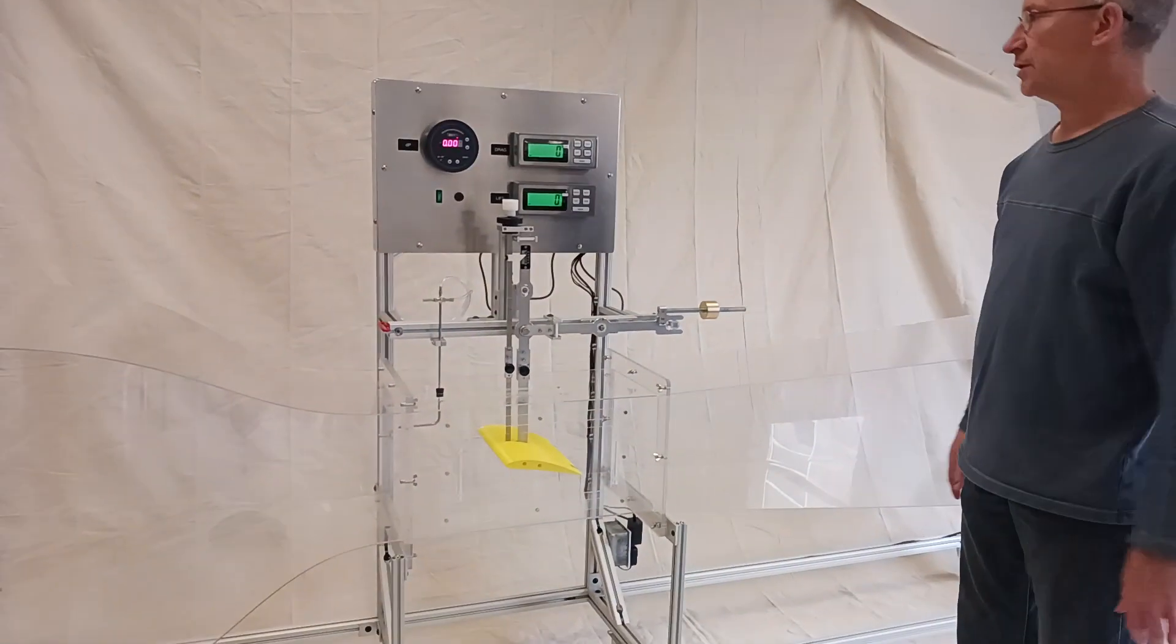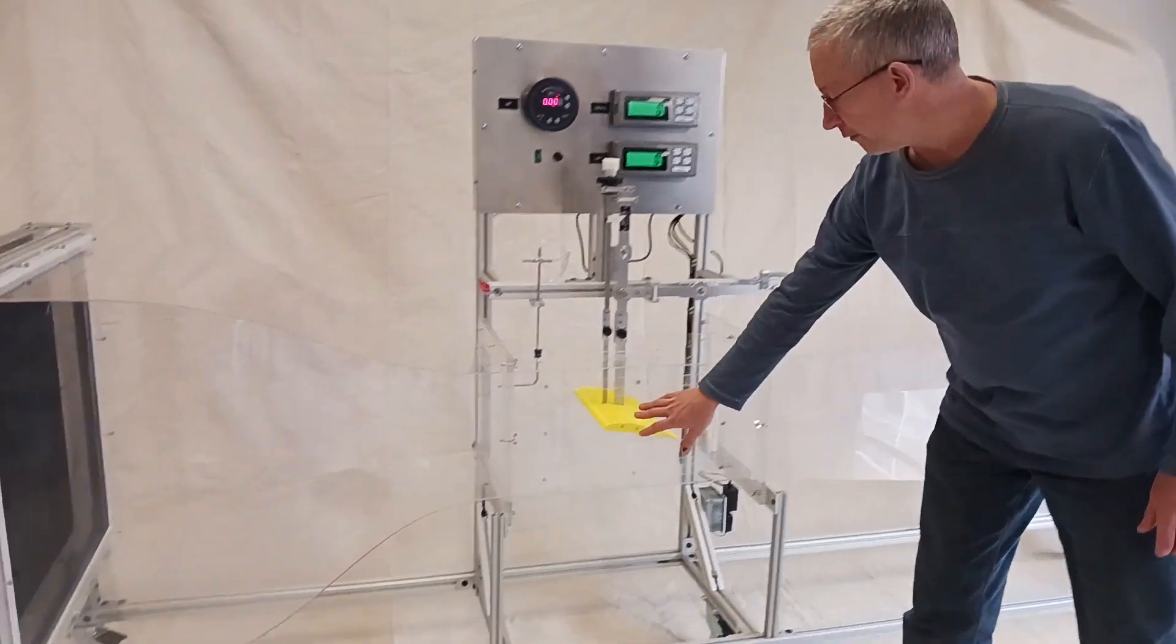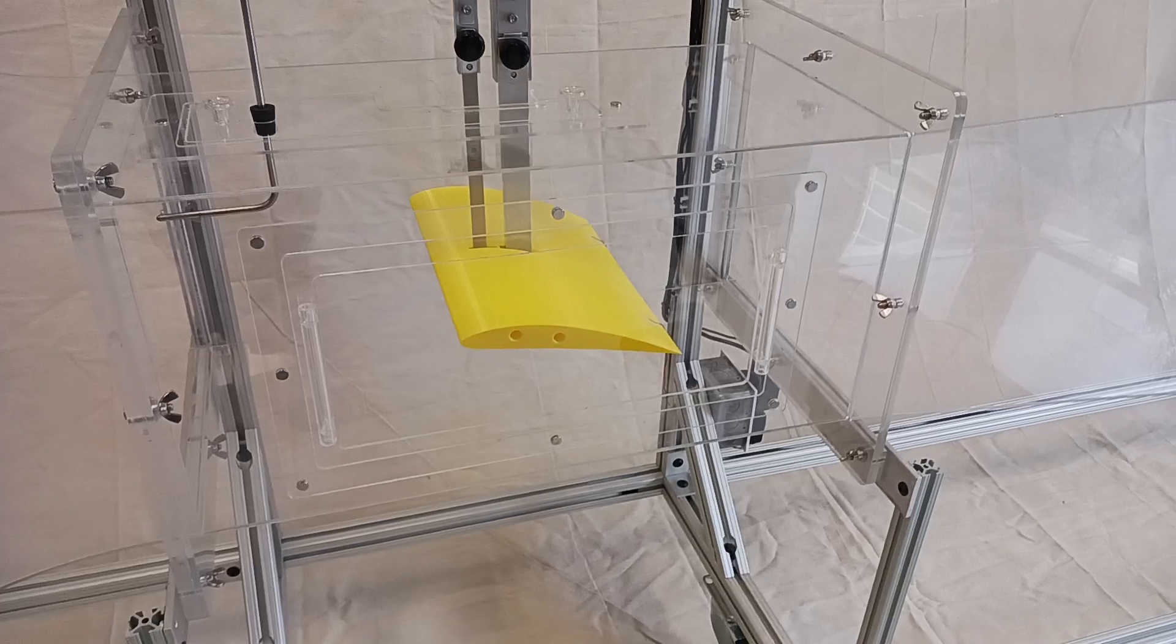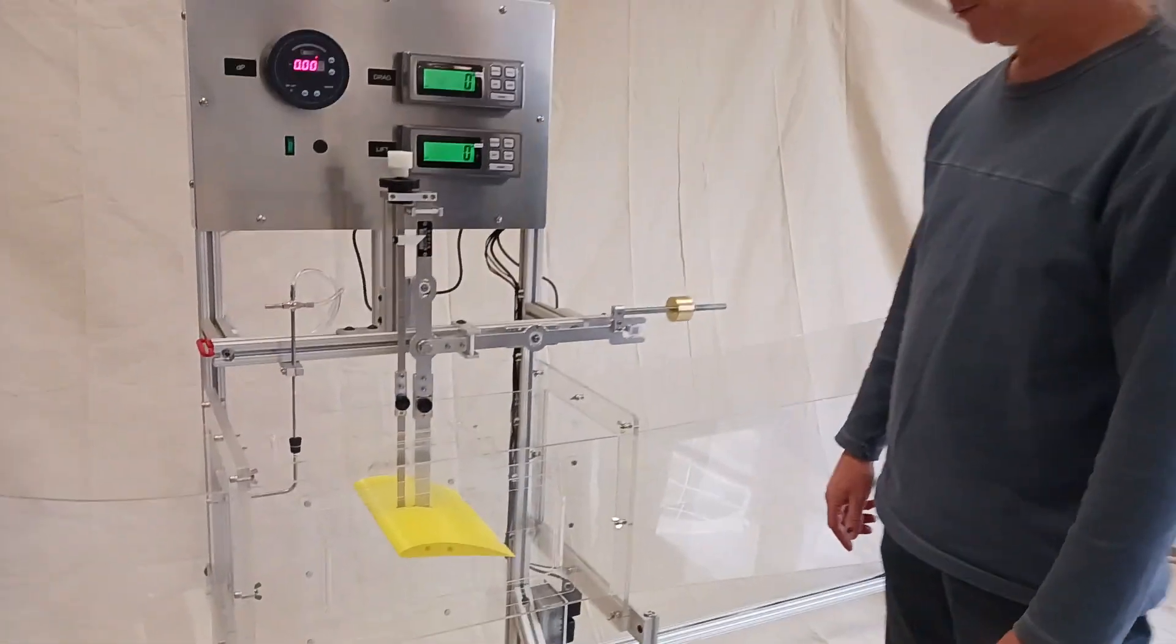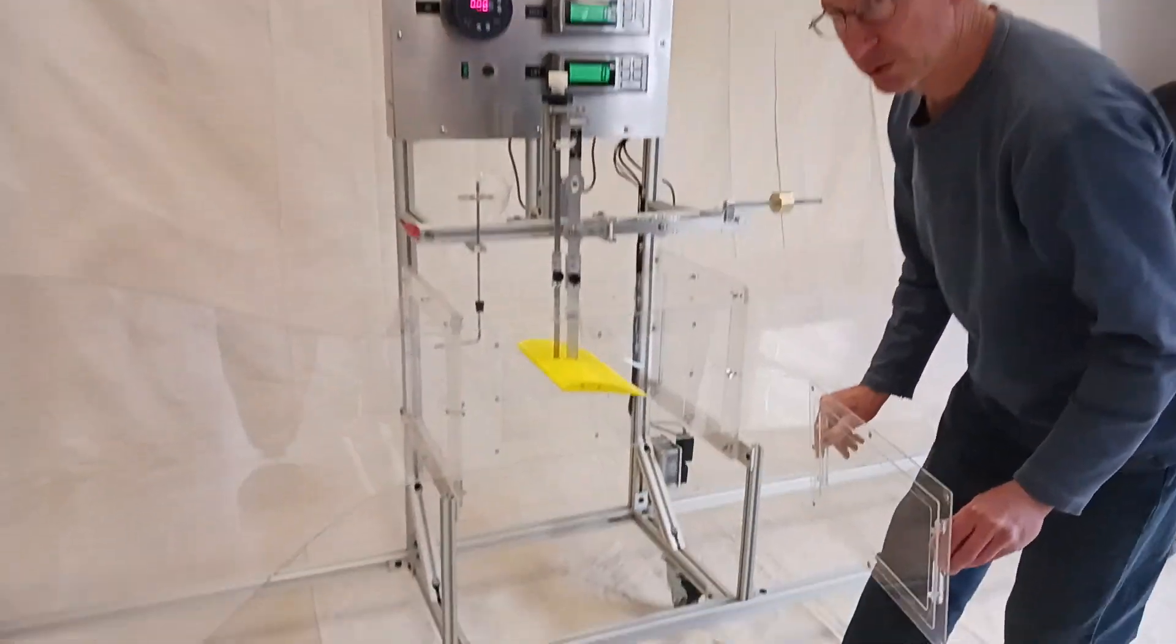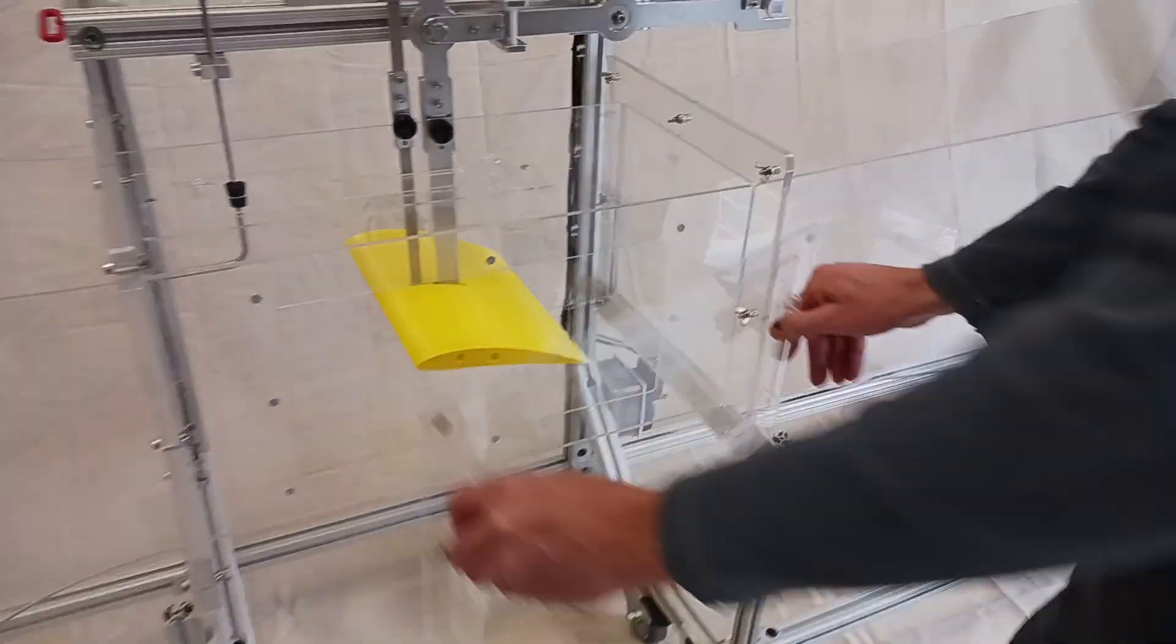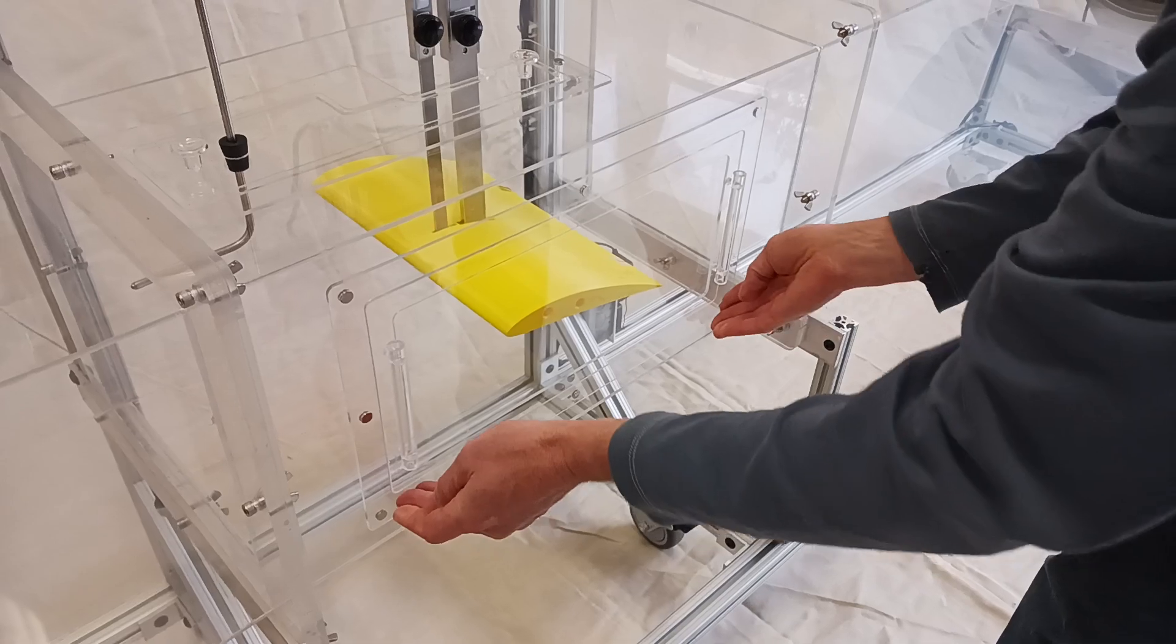And then in the middle section is our measurement section. So we'll start with the airfoil. We have an airfoil that is 3D printed. This is an 8-inch airfoil, happens to be a NACA 6512. And we have a door here that just pops off so that we can switch out airfoils, if we so choose. And we'll just pop that back on.